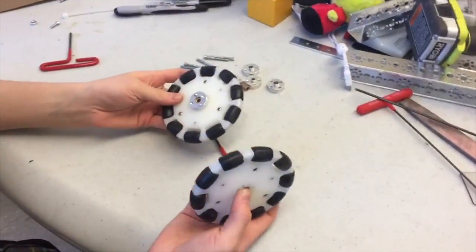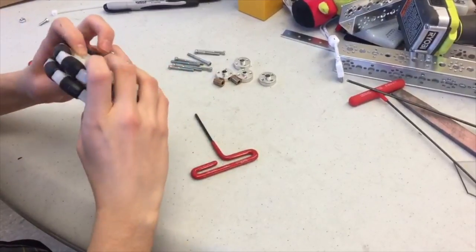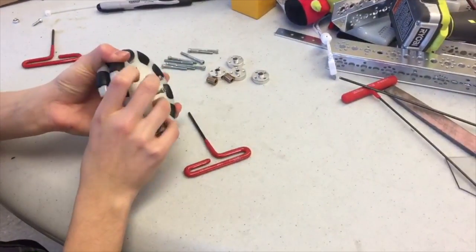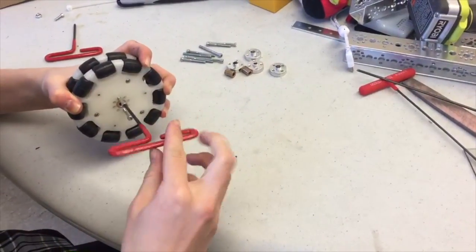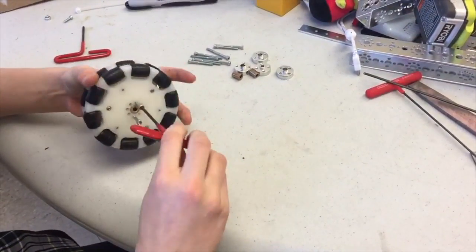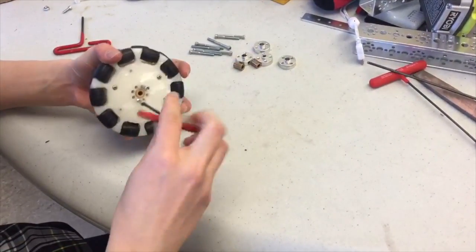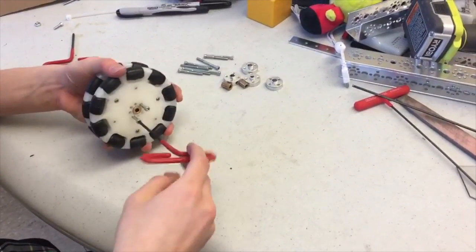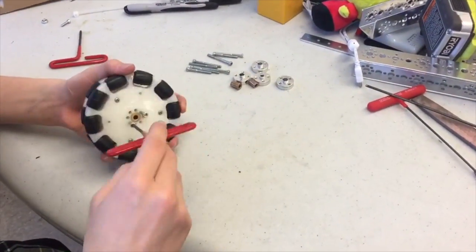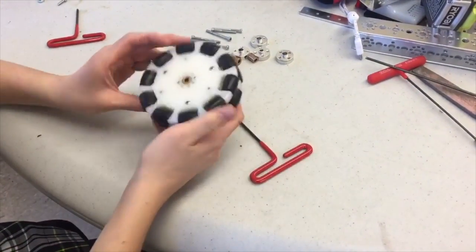Once your screws are in enough so your silver spacer is attached, attach your second omni wheel and line it up with the holes and screws. Make sure you attach it black to white instead of black to black or white to white, because of the way the black wheels are raised. If you did it black to black, your robot would be uneven.